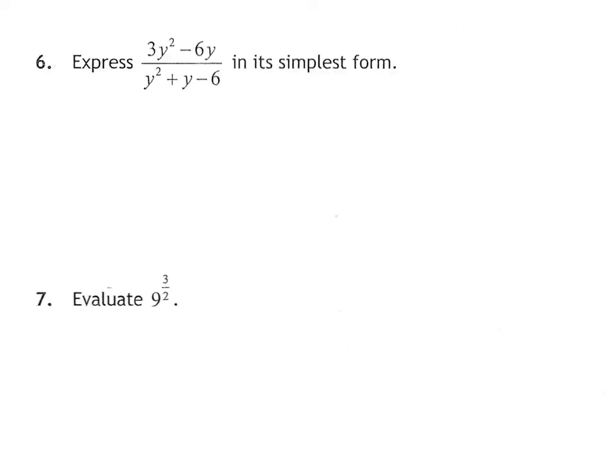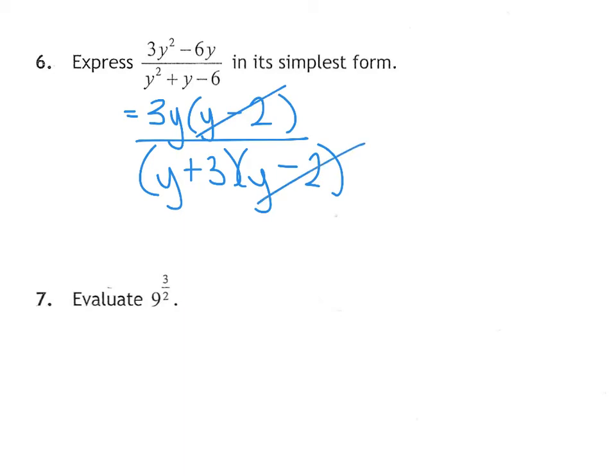Question 6 is your standard factorize and then cancel down question. On the top line, there's a common factor of 3. That leaves behind Y take away 2. On the bottom, that's a pair of brackets. Numbers that multiply to 6 and add to 1 are 3 and 2. It's going to be positive 3 take away 2. Then the minus 2s cancel out nicely. That leaves you with 3Y over Y plus 3. The more you see of them, the better you get.